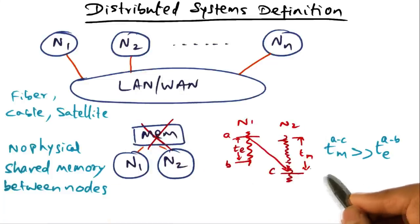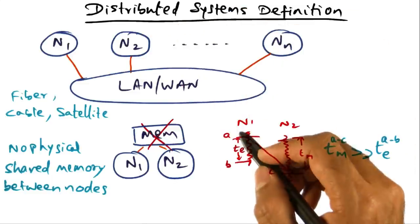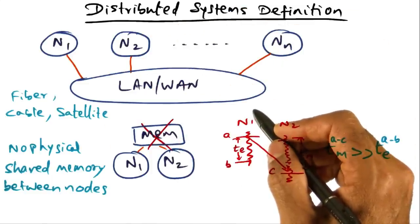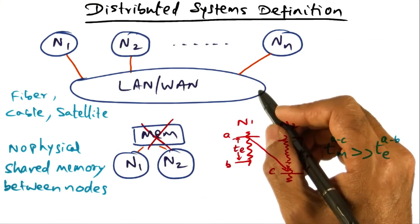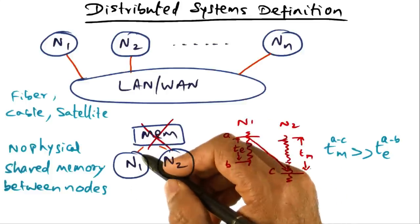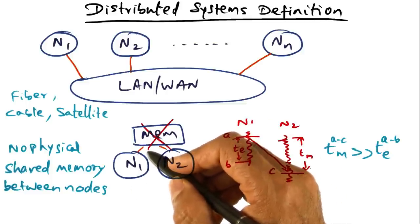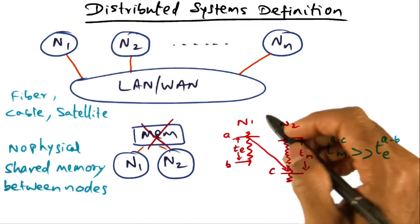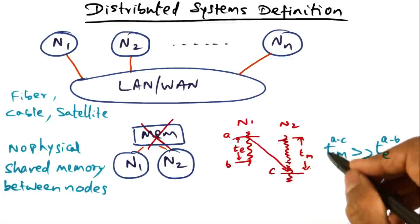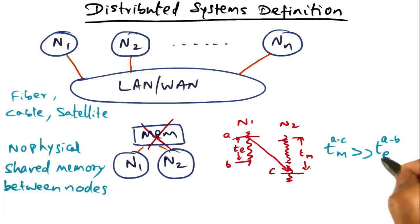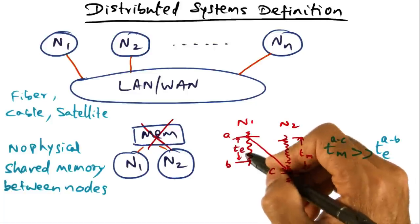So these are the three properties to ensure a shared understanding of what we mean by a distributed system: they are connected by a local area network or a wide area network; they don't physically share memory, so the only way they can communicate is via messages sent between nodes; and the message communication time is significantly larger than the event computation time that happens on a single node.